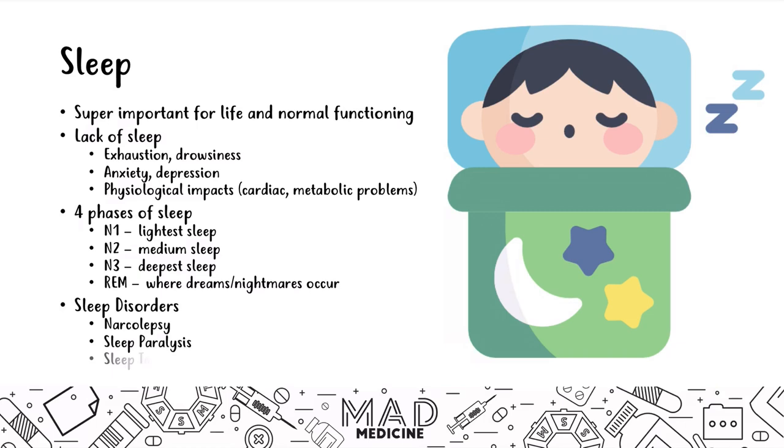And then there are four sleep disorders you need to know for step one: narcolepsy, sleep paralysis, sleep terror, and enuresis. In this video, we're going to be discussing the four phases of sleep and each of these sleep disorders and what you need to know for step one.